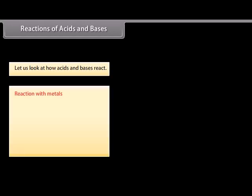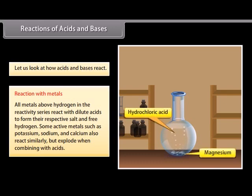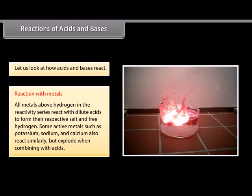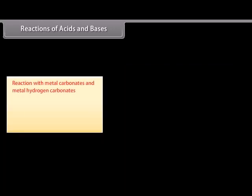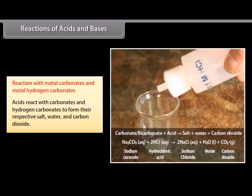Reaction with metals. All metals above hydrogen in the reactivity series react with dilute acids to form their respective salt and free hydrogen. Active metals such as potassium, sodium, and calcium also react similarly, but explode when combining with acids. Reaction with metal carbonates and metal hydrogen carbonates. Acids react with carbonates and hydrogen carbonates to form their respective salt, water, and carbon dioxide.